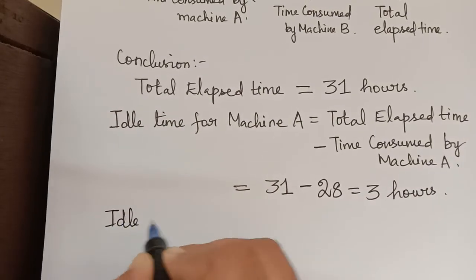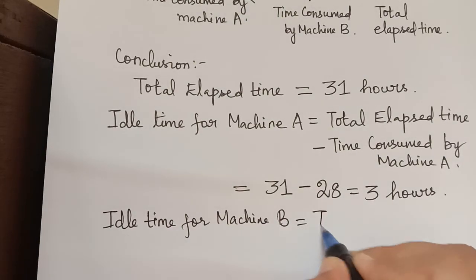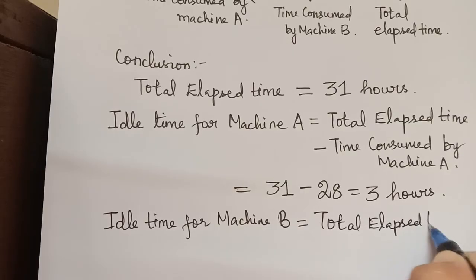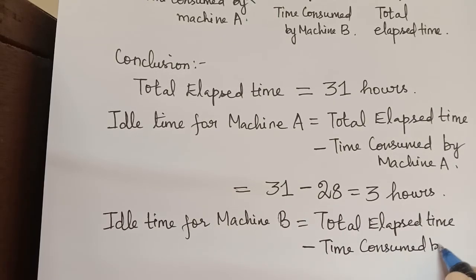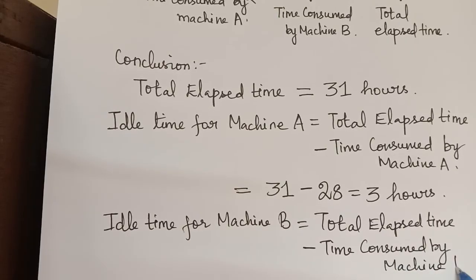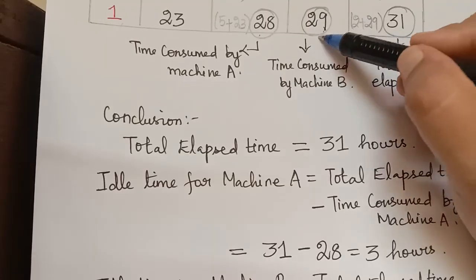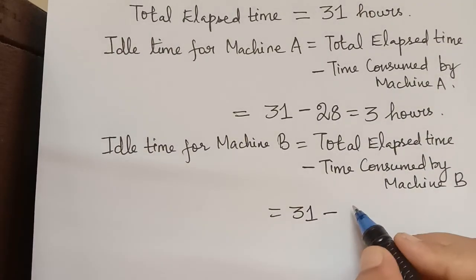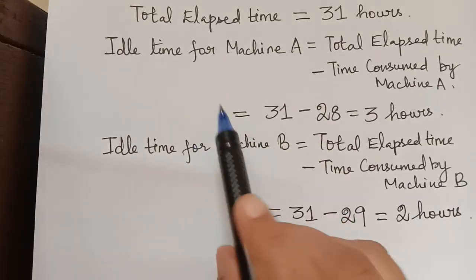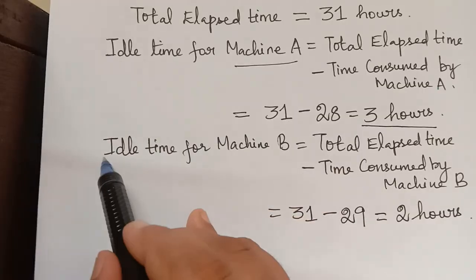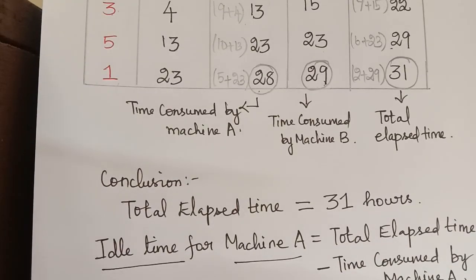The idle time for machine B is: total elapsed time minus time consumed by machine B. That is 31 minus 29, which equals 2 hours. Therefore, the idle time for machine A is 3 hours and the idle time for machine B is 2 hours. We have found the complete solution. Hope you understood this problem.